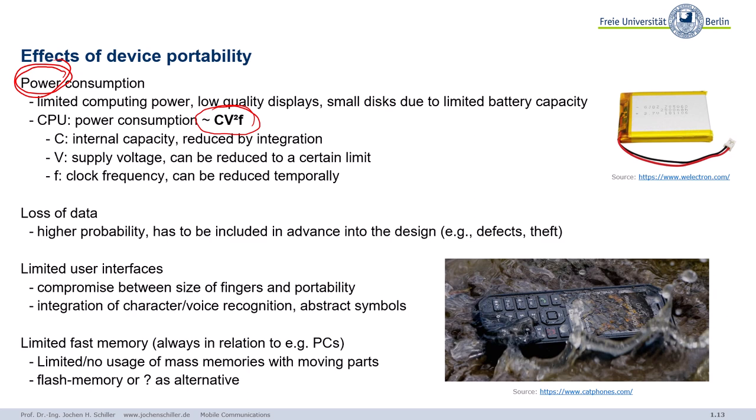Power consumption is a key problem because while we have developed newer and faster processors, batteries — yes, they are better compared to 20 or 30 years ago — have improved by factors of 100 or 1,000, not factors of millions like the processors. So we still have a battery problem.